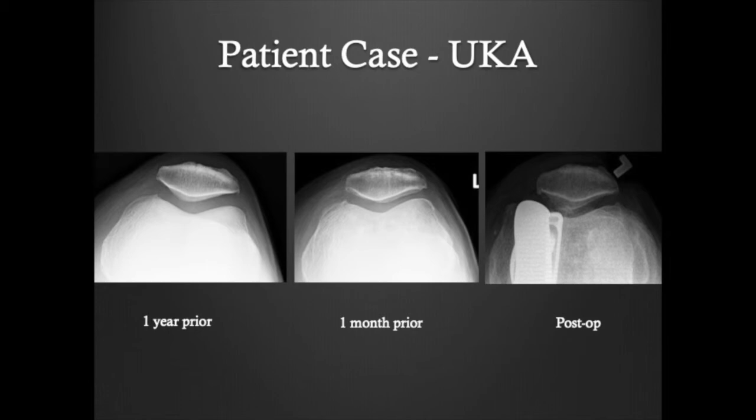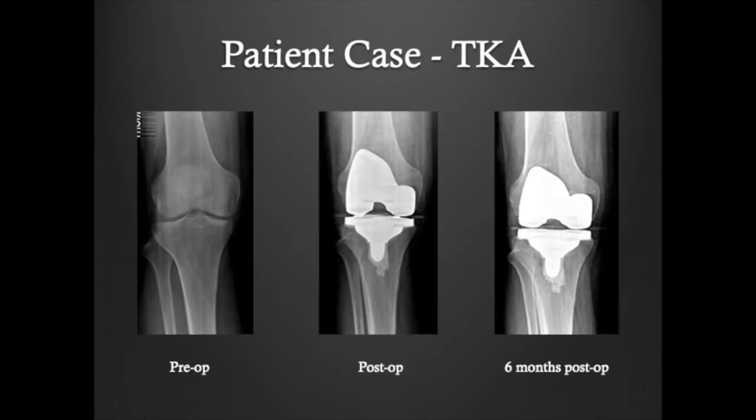This is a case of a patient requiring total knee replacement. In this patient, there is joint space narrowing of both the medial compartment and the lateral compartment. Post-operatively, you can see the knee replacement components in anatomic position. The femur has been resurfaced, as has the tibia.